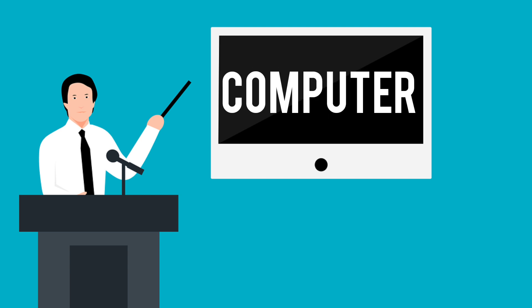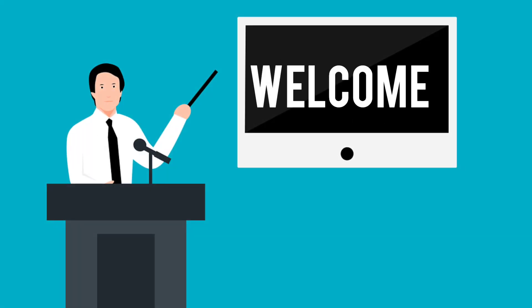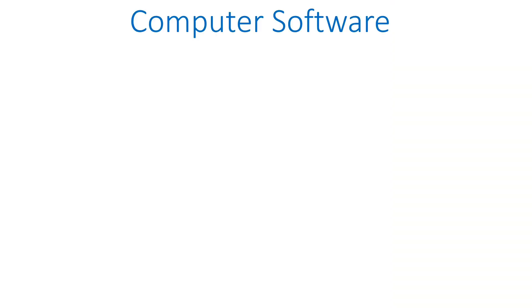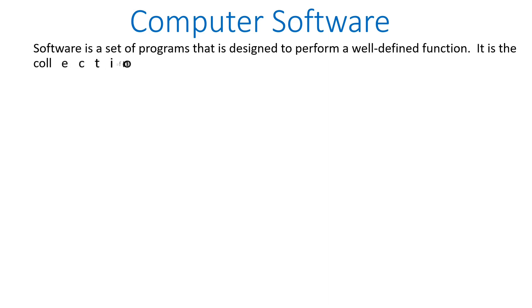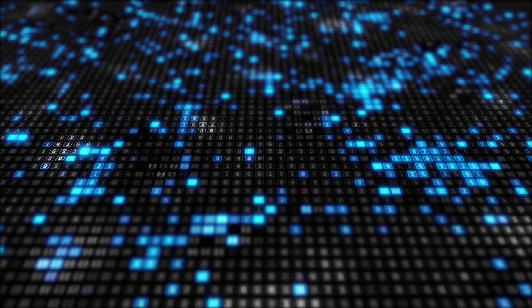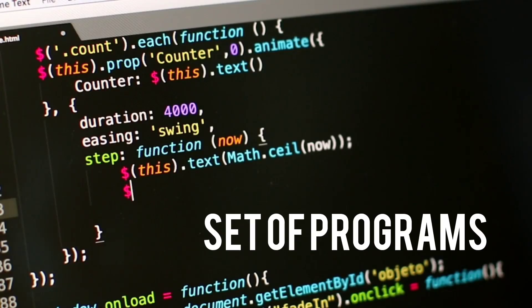Welcome everyone. Computer software is a set of programs designed to perform a well-defined function. It is the collection of sequences of instructions and procedures that are able to perform tasks. The collection of codes, instructions, or set of programs that are capable of doing some special task are called computer software.